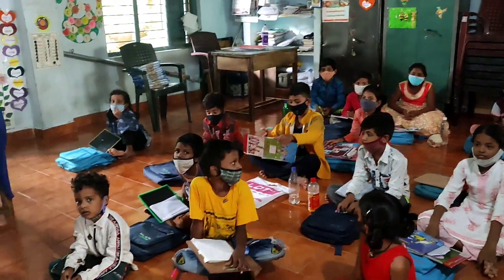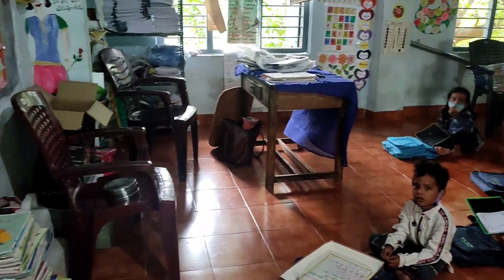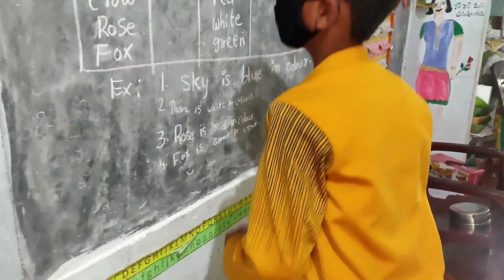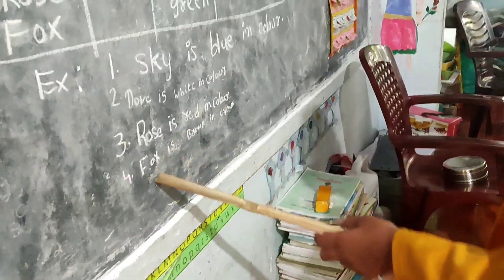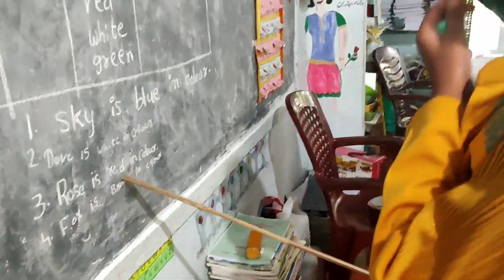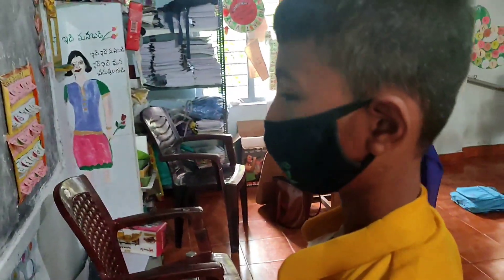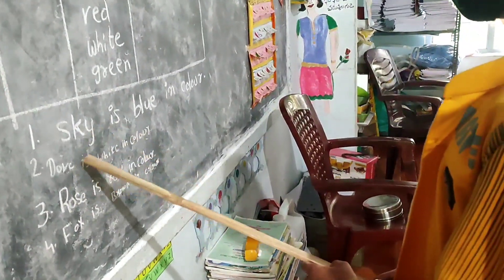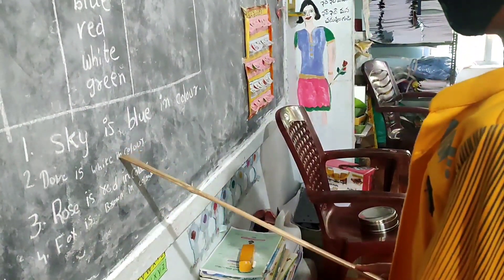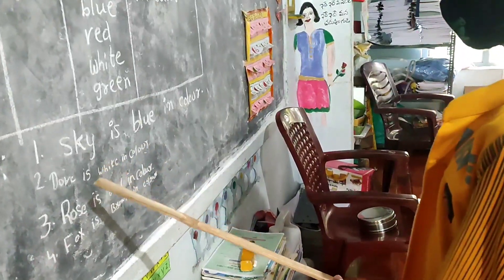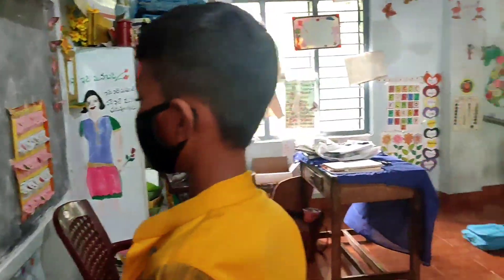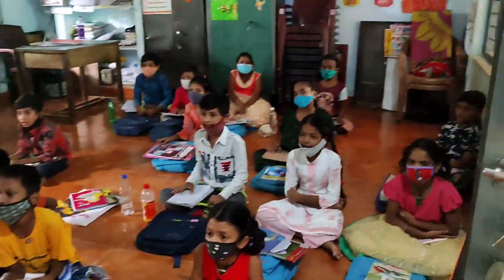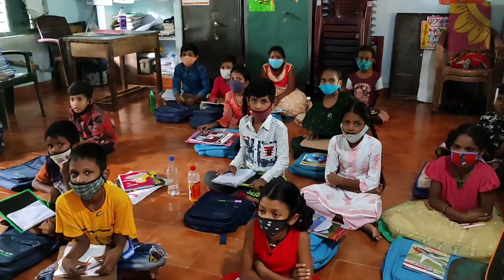Ahmad, come. Read that sentence, Ahmad. Fourth one: Fox is brown in color. Now read the second sentence. Dow is white in color. First sentence: Sky is blue in color. Okay, very good. Go to your place.